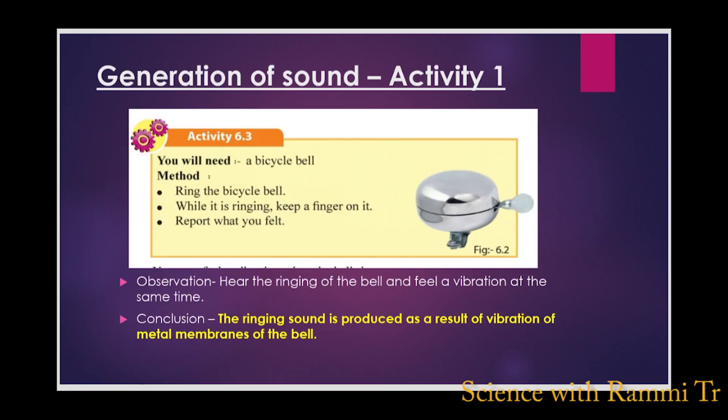We are going to do some activities to identify how sound is produced. Activity 1. It is a simple activity that you all can do at home. Keep your finger over the bell and make it ring. You feel a vibration when the bell rings. The sound is produced due to the vibration of the metal membranes of the bell.